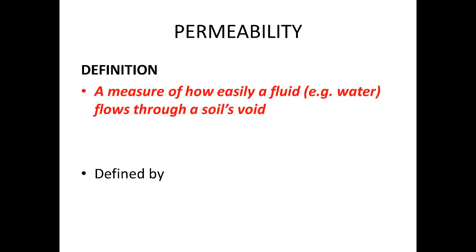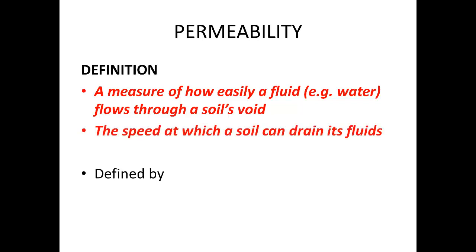With that in mind, one important property relating to the presence of water in soils is permeability. What is permeability? One definition for permeability is how easily water or another fluid flows through a soil. Another definition is how quickly a soil can be drained of water or another fluid. Mathematically, permeability in soils is defined by the coefficient of permeability, k. This is also known as the hydraulic conductivity of a soil.